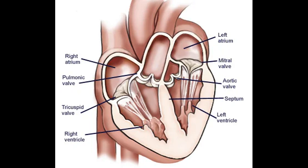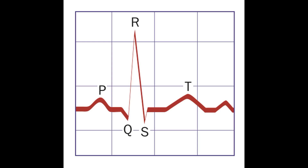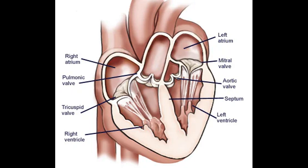Atrial Systole is just 0.1 seconds and then the atria start to repolarize again. Now blood is all in the ventricles and the atria are fully empty. The tricuspid and mitral valves are open and blood is in the ventricles. Now ventricles start to depolarize, represented as the QRS complex in ECG. As the pressure in the ventricle increases, the tricuspid and mitral valves will be closed, and that is the first heart sound.